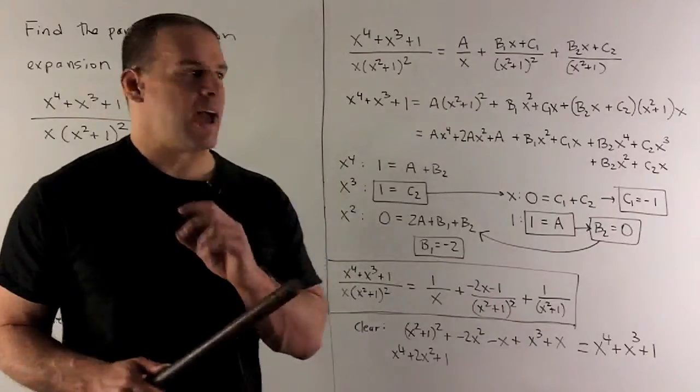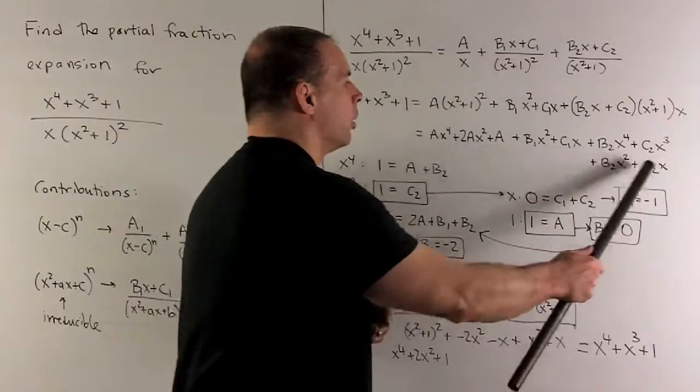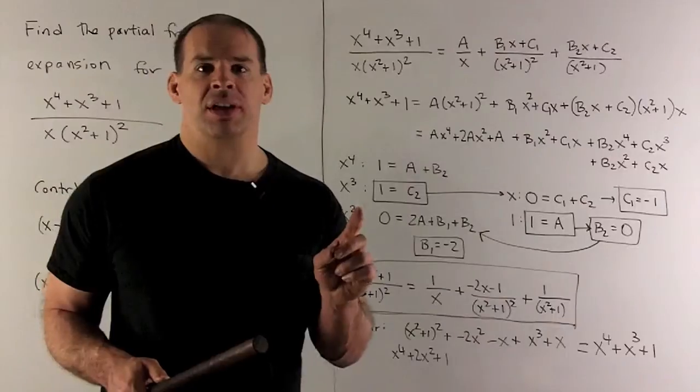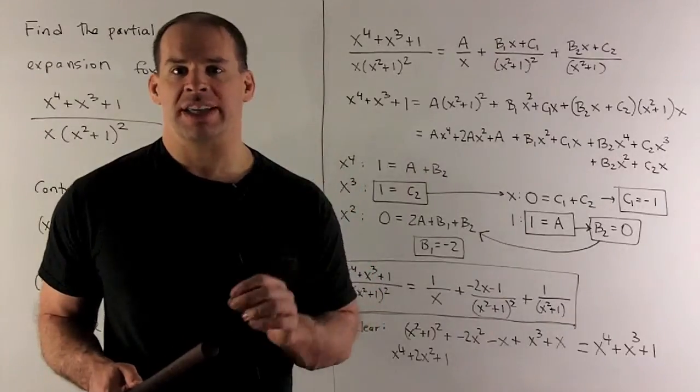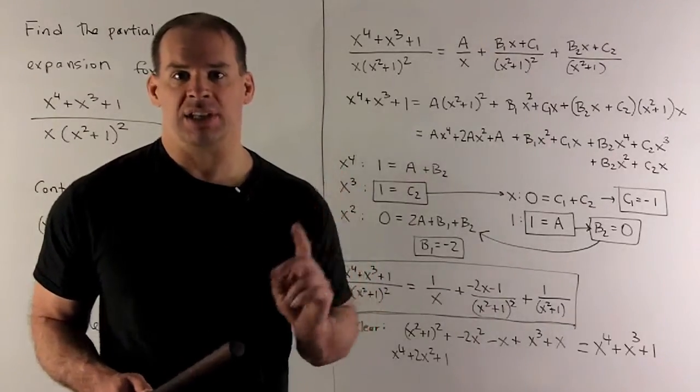And then once we have this equation here, we're just going to identify like powers of x. That'll give us five equations to get A, b's, and c's.